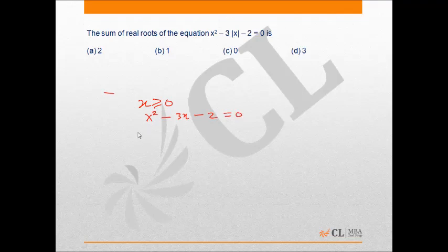Now if you calculate the root, x would be comparing with the standard equation ax square plus bx plus c. X will come out to be minus b which is minus minus 3 plus minus under root of b square, so that is minus 3 whole square minus 4ac, that's 4 into 1 into minus 2.